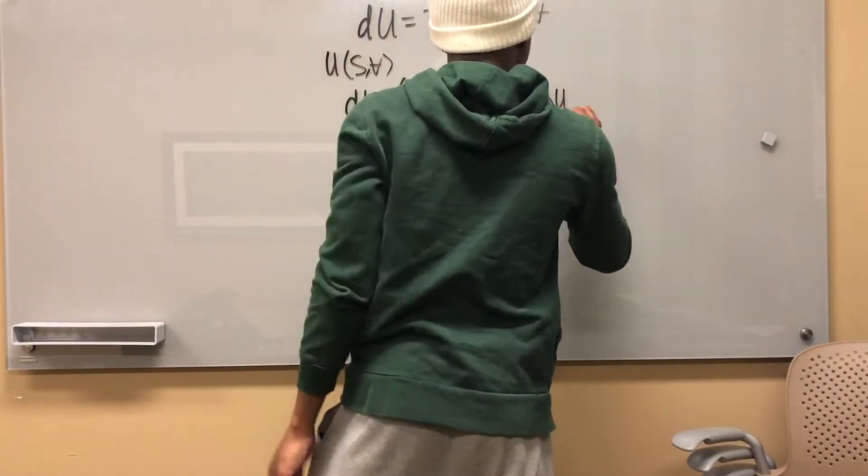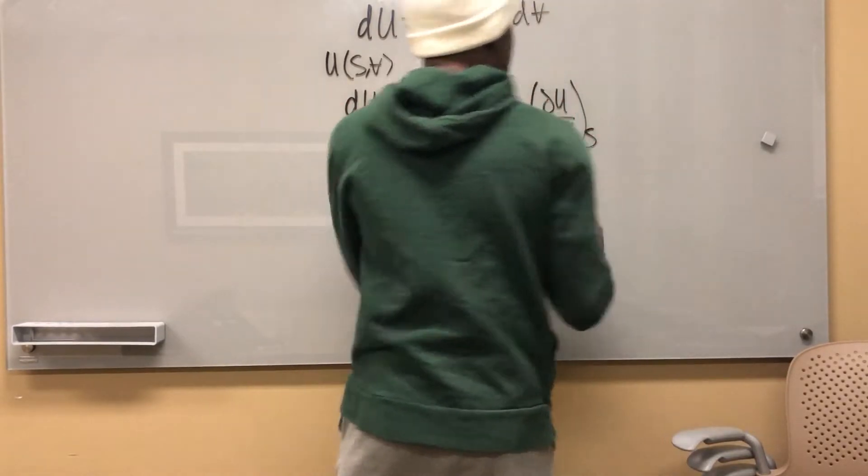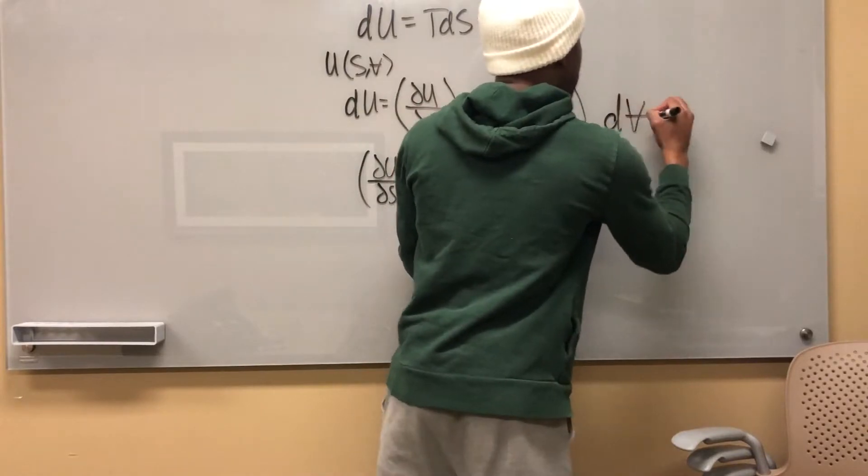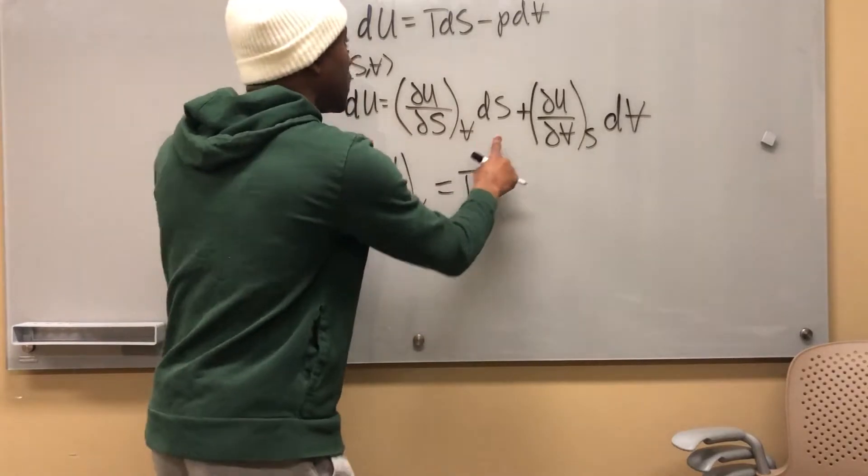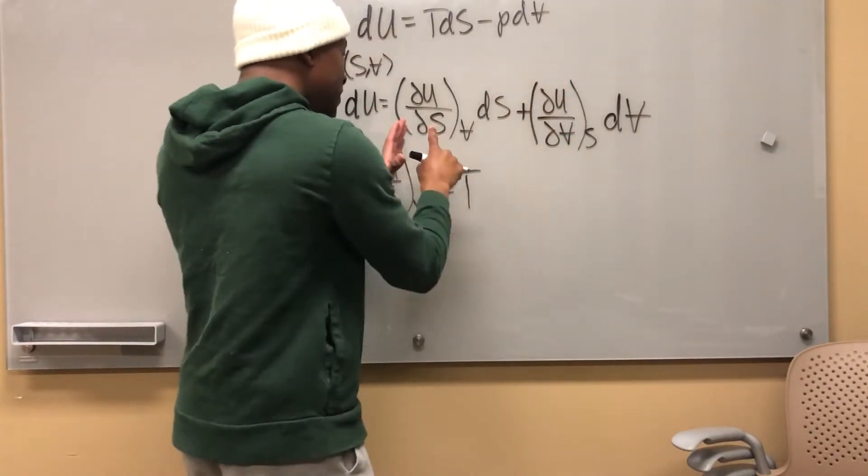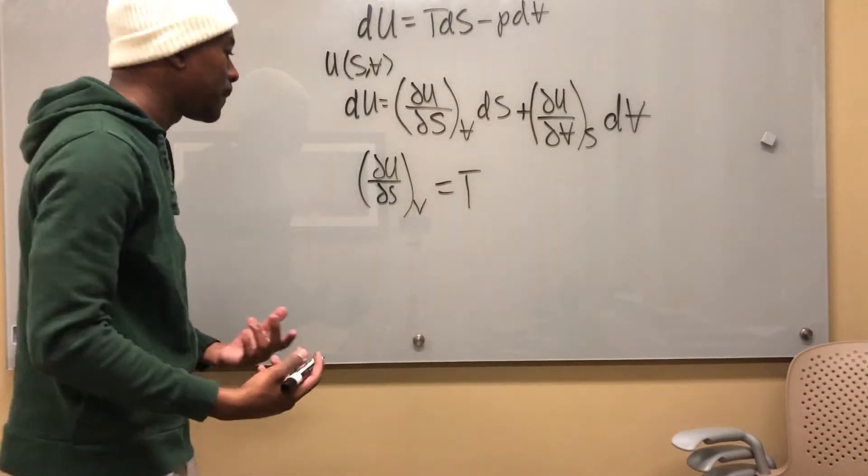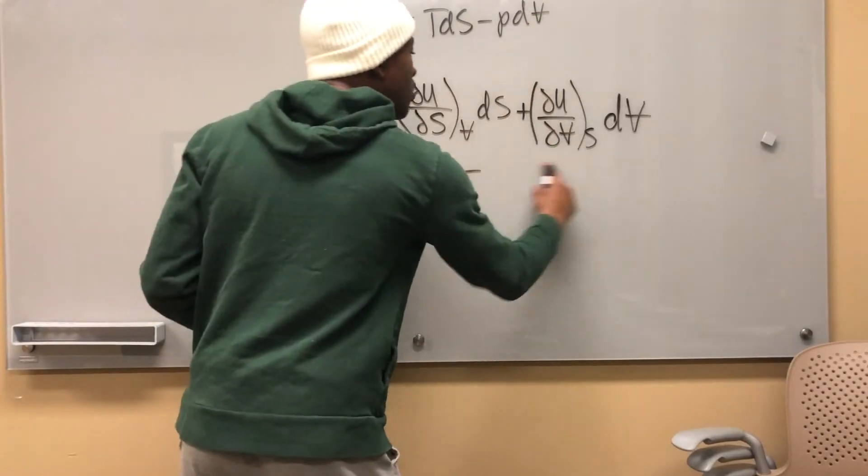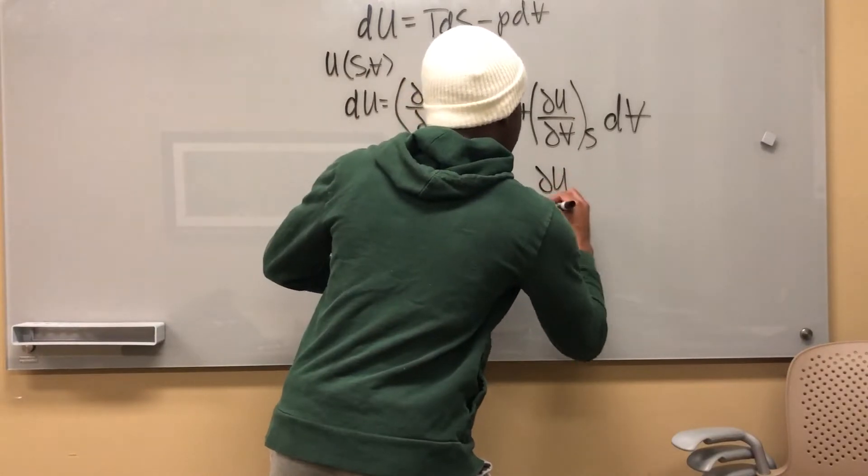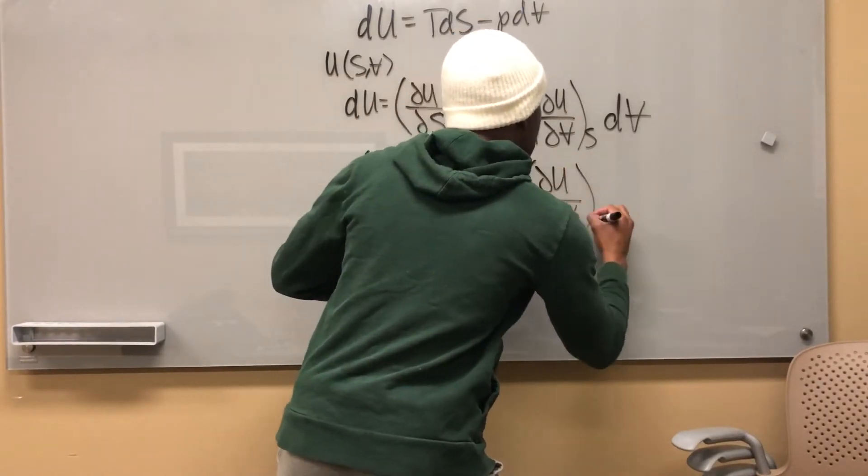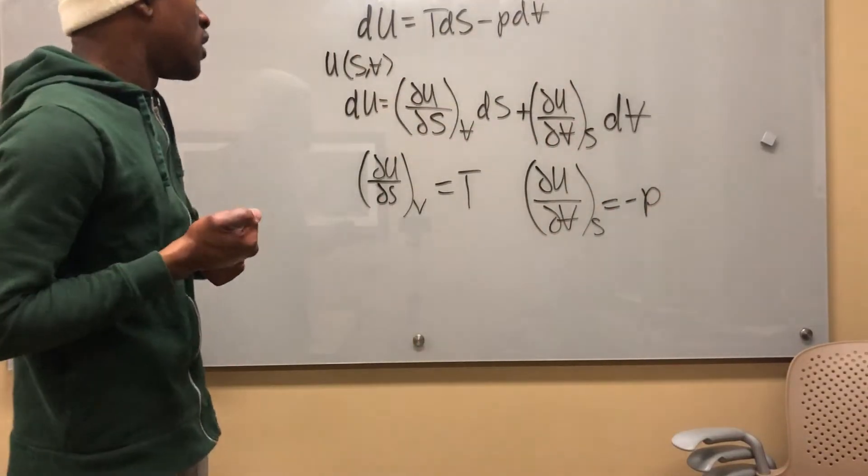Now I can say plus del u del v at constant s, then I have to have my derivative term at the end, dV. So now this term right here with my ds is equal to T, and this term right here with dV has to be equal to negative p. So del u del v at constant s is equal to negative p.